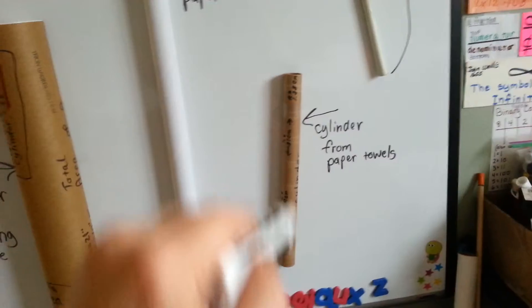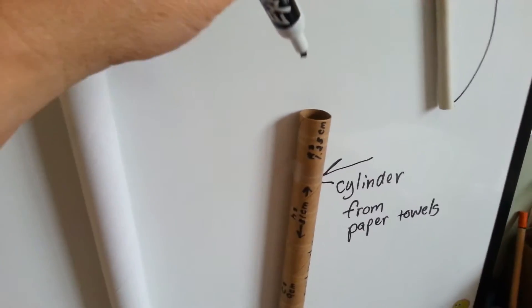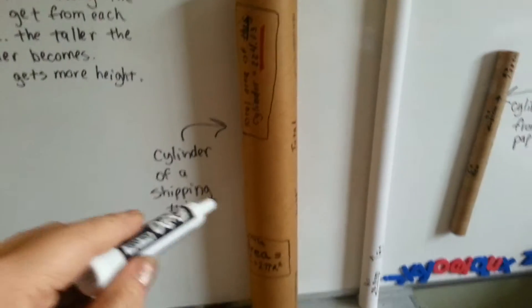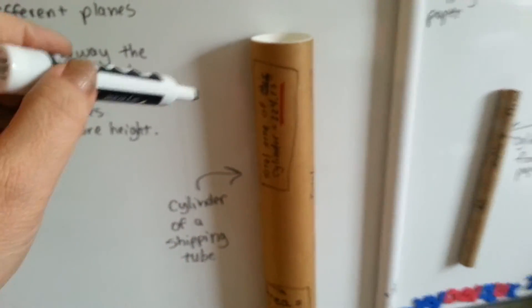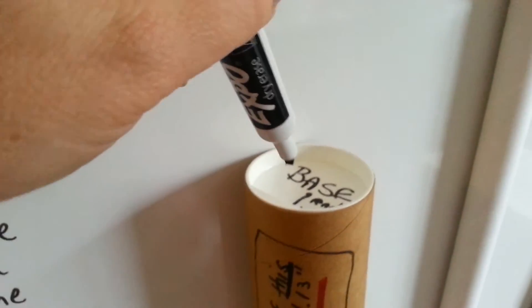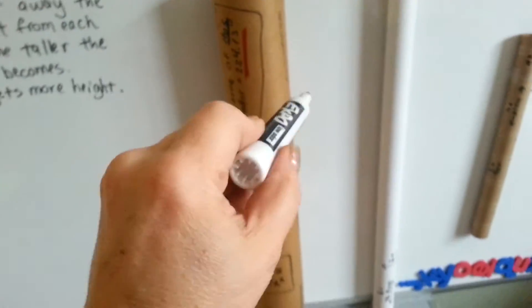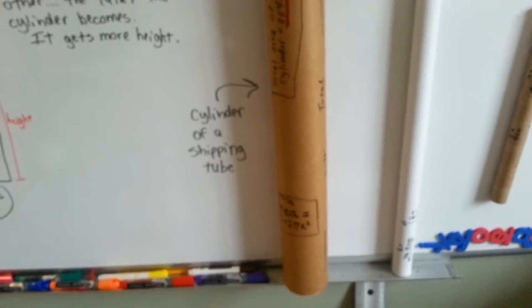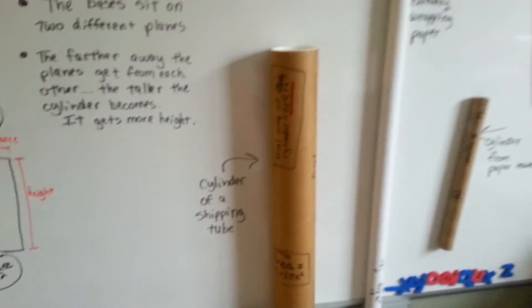Here's one from paper towels. It's a cylinder. And then we have a real big one. This one's got maps inside of it, cuz I love maps. So here's the base, right here, and this is a pretty big one, cuz it's a shipping tube. See? So those are cylinders.